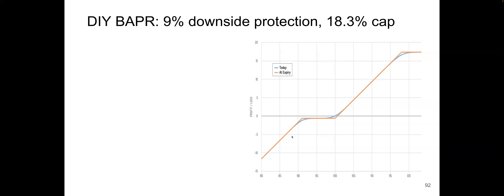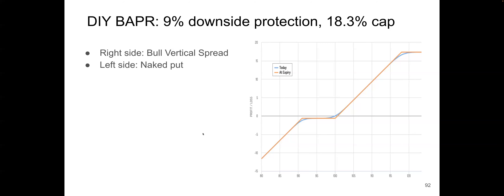If you look at the picture to the right, it's very similar to the Buffered ETF we looked at last time — it's actually a vertical spread. And on the left side, this picture has unlimited loss and limited gain, so it is either a naked put or covered call. I'll just use a naked put.